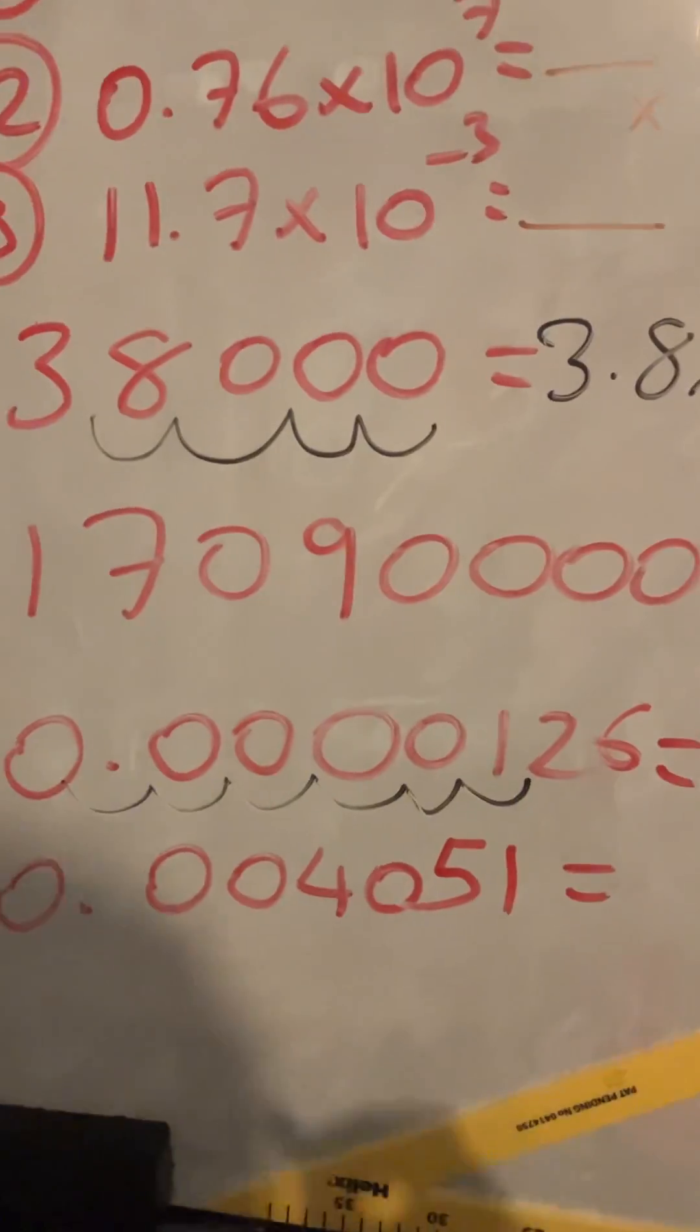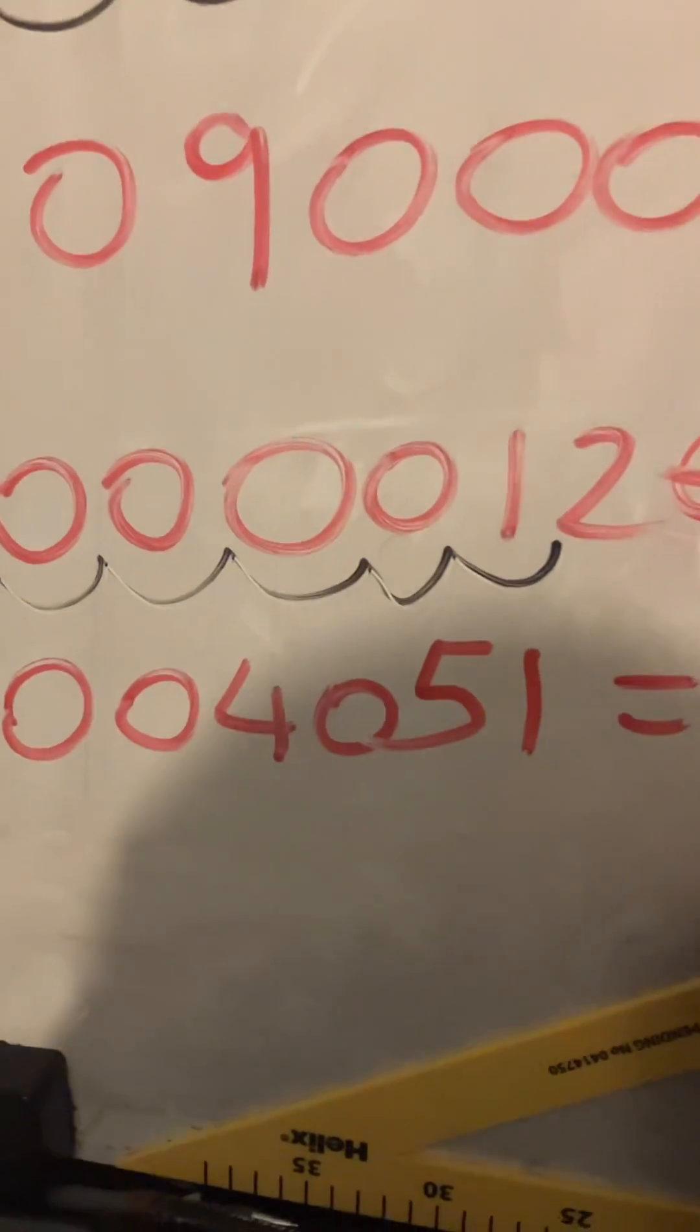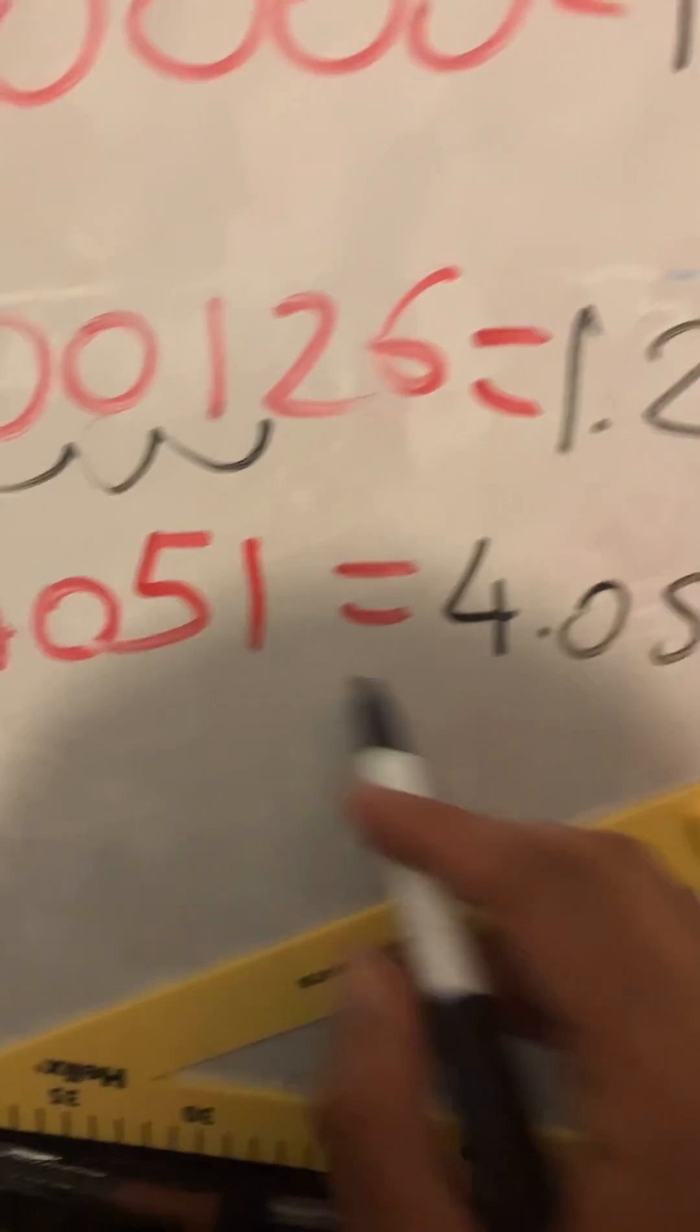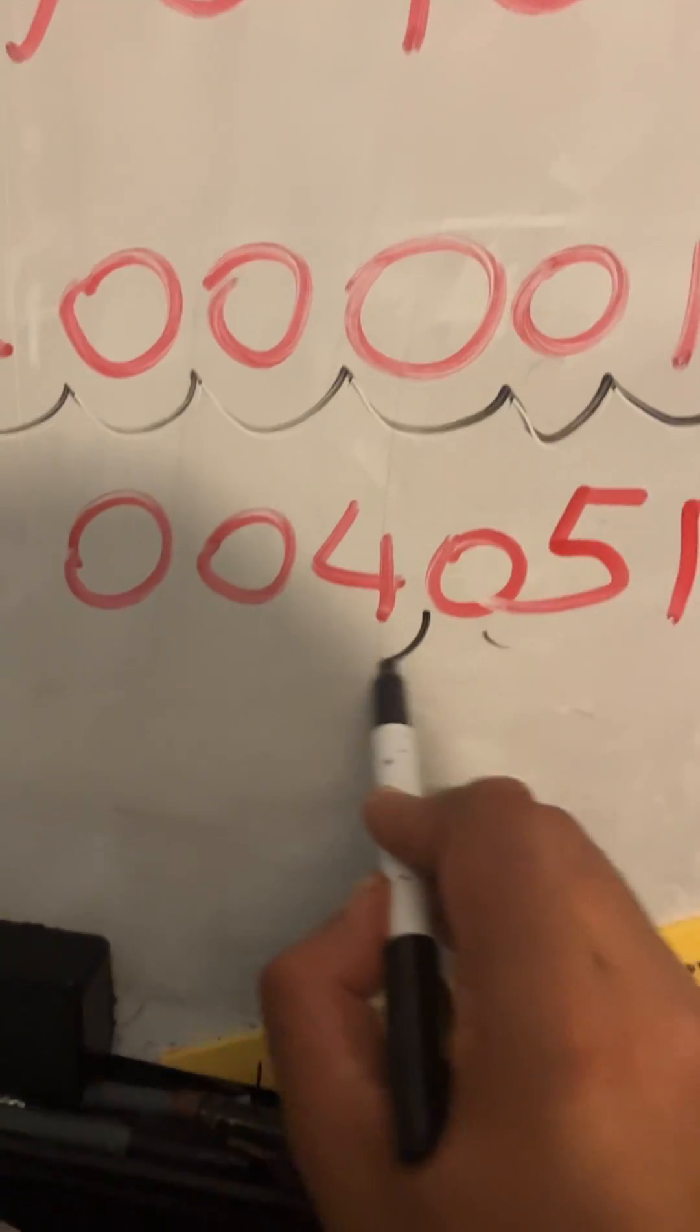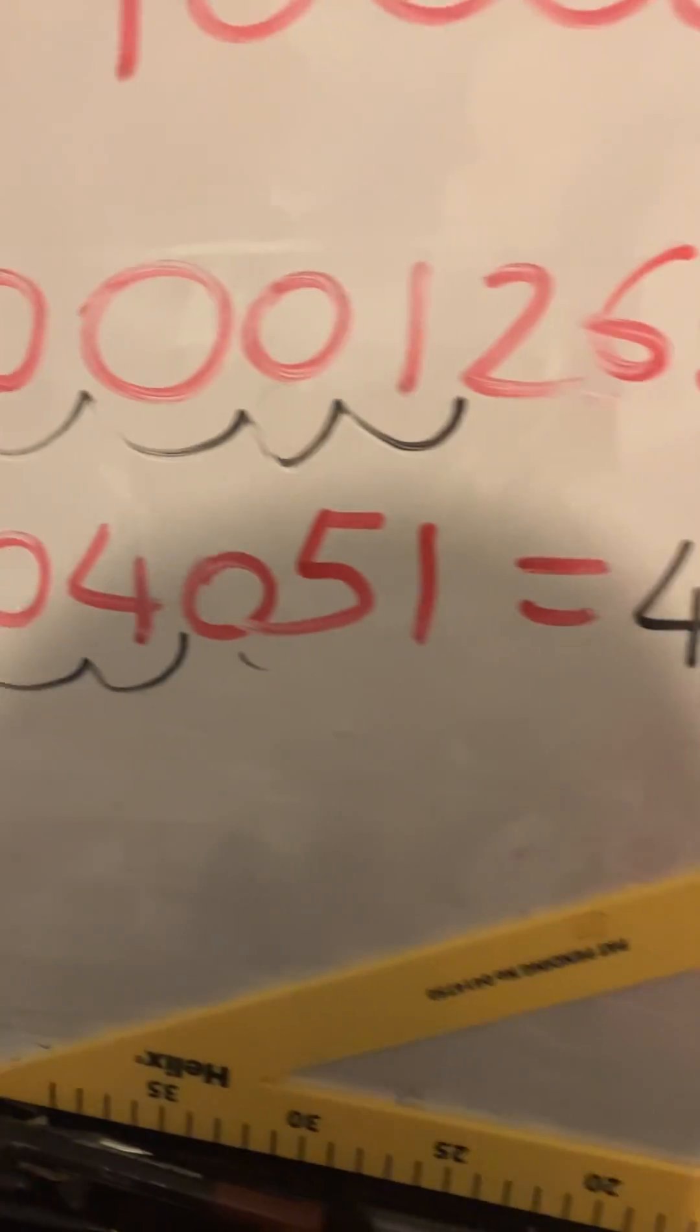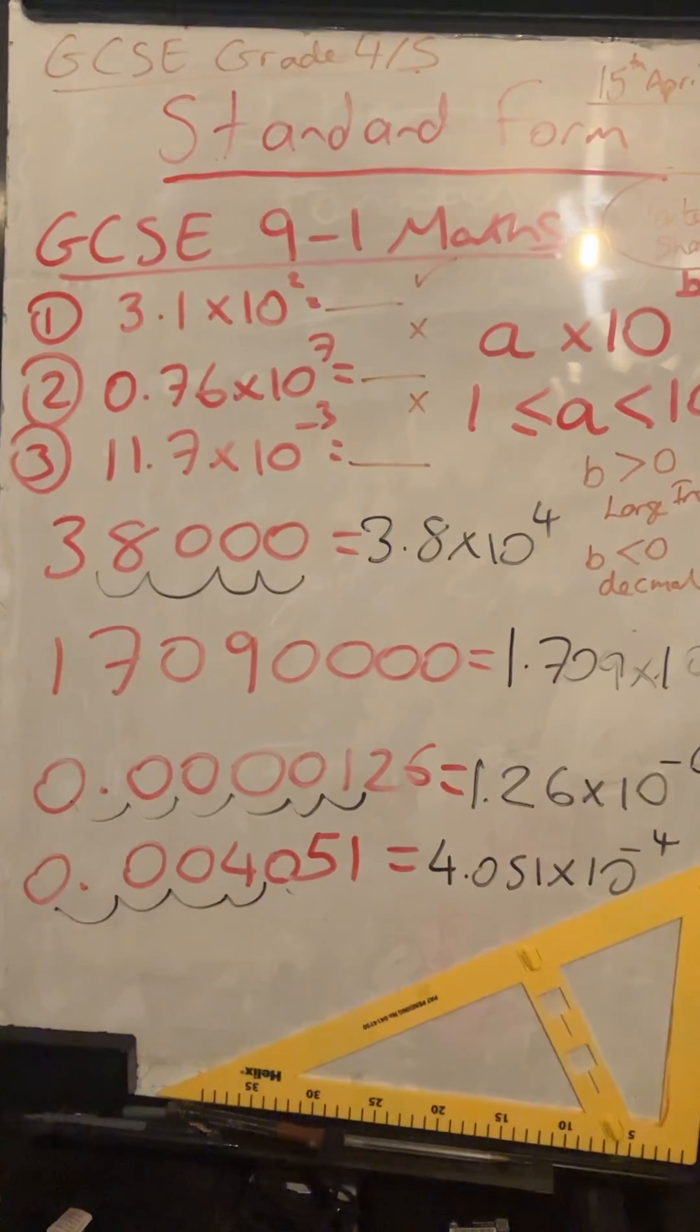This last one, 0.004051, that's going to be 4.051 times 10 to the power of, I've got this point there, 1, 2, 3, minus 3. That's the answer to the last question.